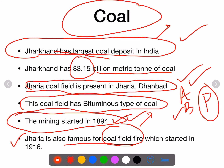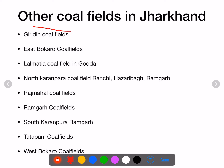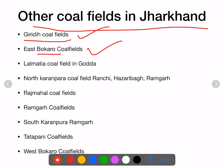The coal field fire in Jharia started in 1916, and it's been over 100 years with no one able to extinguish it. Other coal fields in Jharkhand include: Giridi coal field, East Bokaro coal field, and Lalmatia coal field which is in Godda.